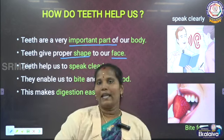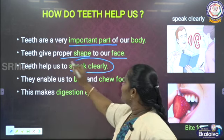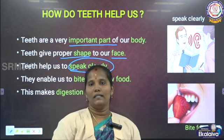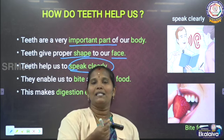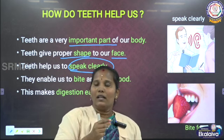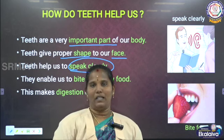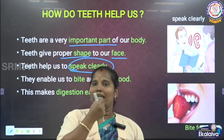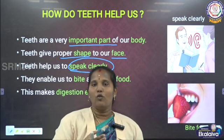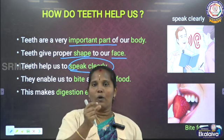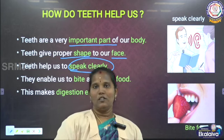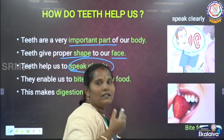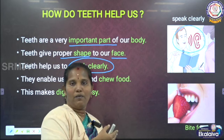Next, teeth help us to speak clearly. Just see - if an old person or a baby does not have teeth and both are speaking, we cannot understand what they are saying. Their words are not clear because they don't have teeth. When teeth are arranged properly and we pronounce words, the air is sent out through the proper shape, so we get the proper pronunciation of the letters. Teeth help us to speak clearly.